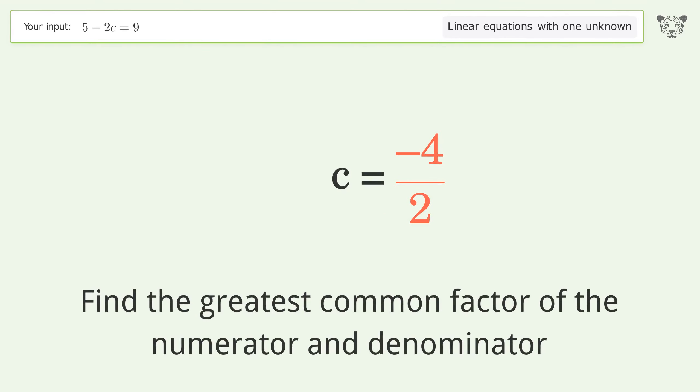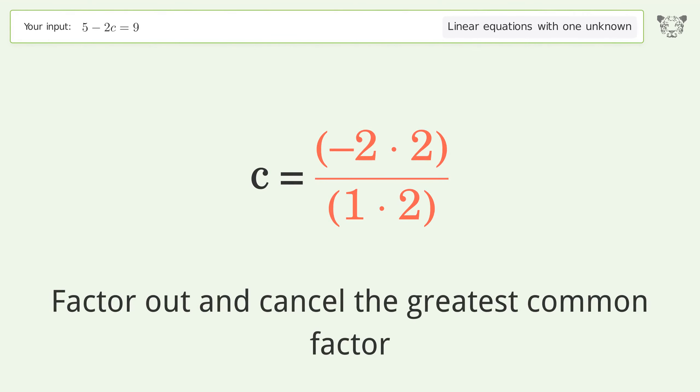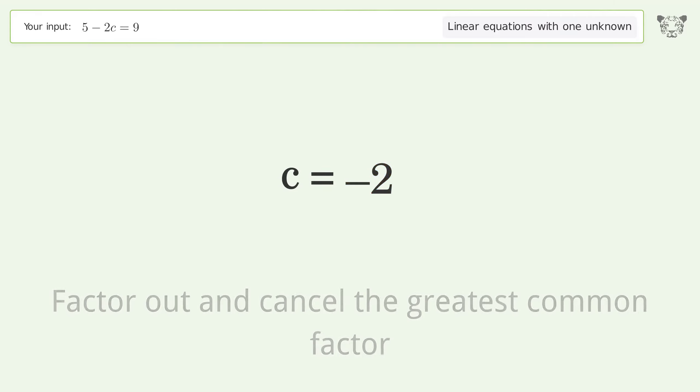Find the greatest common factor of the numerator and denominator. Factor out and cancel the greatest common factor. And so the final result is c equals negative 2.